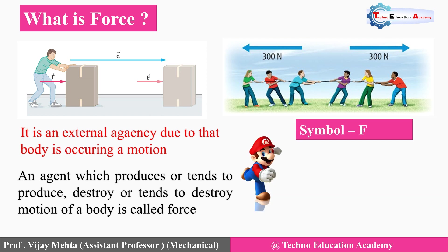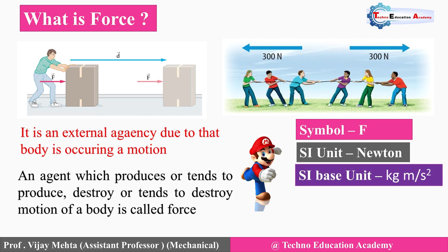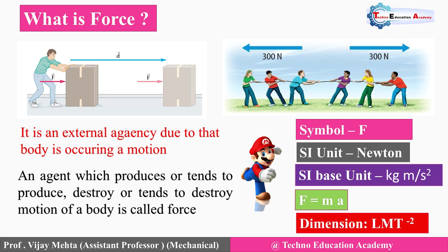The symbol of force is F, represented by F, and in SI units its unit is Newton. The SI base unit is kg·m/s², which we can derive from the equation F = ma, derived from Newton's second law: the rate of change of momentum is proportional to force. So mass is in kg and acceleration is in m/s². The dimension of force is M·L·T⁻².